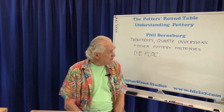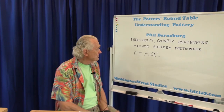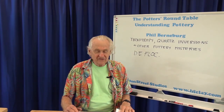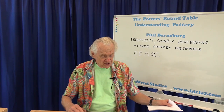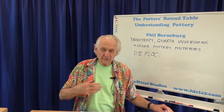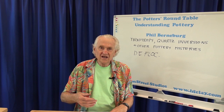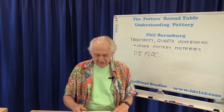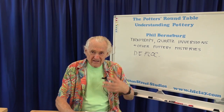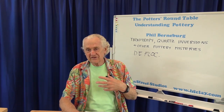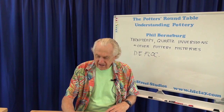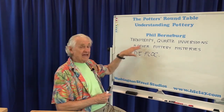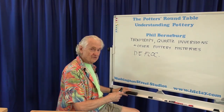We're continuing with our discussion of thixotropy, quartz inversions, and other pottery mysteries. We just finished up in the last episode talking about deflocculation. We're trying to talk about these different terms in the general sequence in which the steps would occur in pottery processing. So we're talking as it refers right now to glazes and that sort of thing. The next topic I want to talk about is thixotropy.